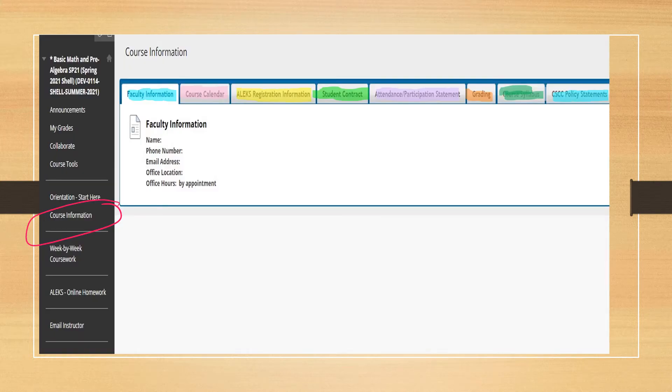Here is a picture of the course information page where you will find your instructor's contact information, the course calendar of assignments, Alex 360 registration instructions, the student contract, attendance policies, grading policy, and the course syllabus.